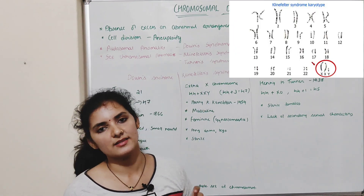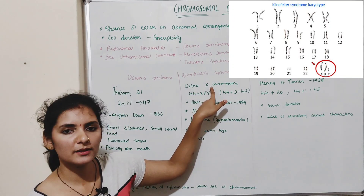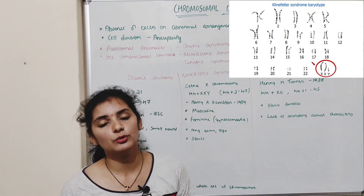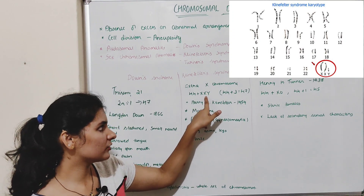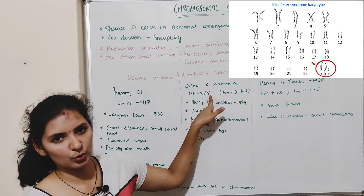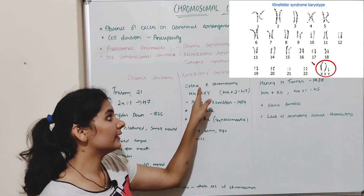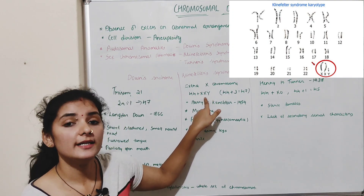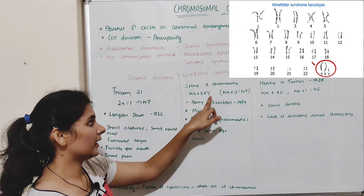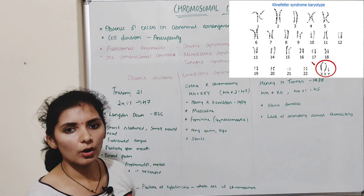Klinefelter syndrome is a genetic disease caused mainly due to an extra X chromosome. X chromosome is the sex chromosome, so there is an additional X chromosome along with the Y chromosome. A normal individual has X and Y chromosomes, but this individual has 2 X chromosomes plus the Y chromosome, giving 3 sex chromosomes instead of 2. That is why it comes under sex chromosomal anomalies.